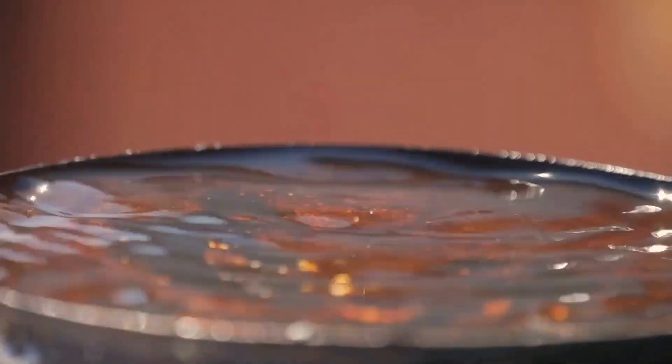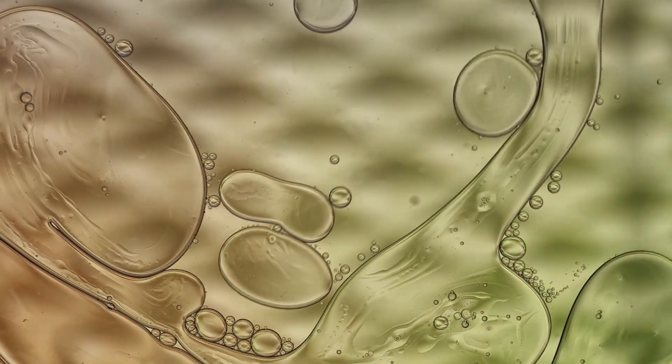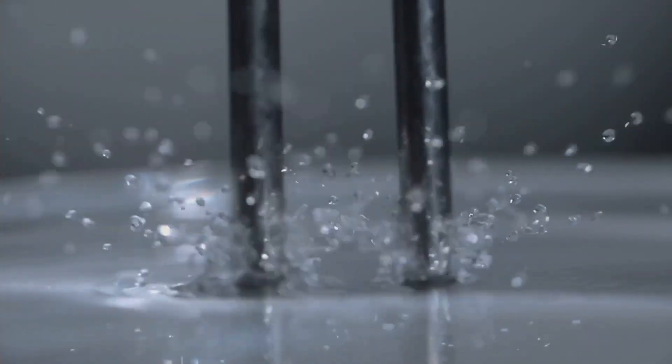Have you ever wondered why some raindrops splash into tiny droplets while others spread out like a pancake? Or why some bubbles are small and delicate while others grow big and tough? The answer lies in a fascinating scientific concept called the Weber Number, or WE for short.